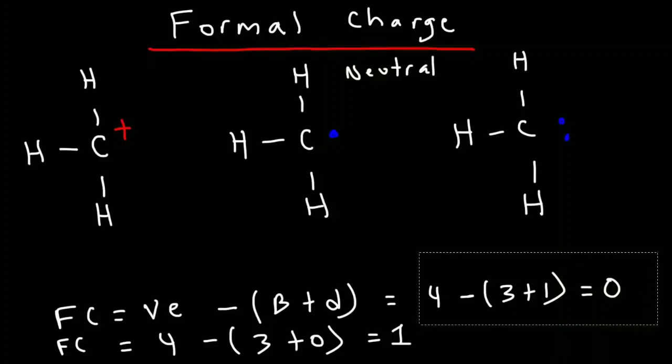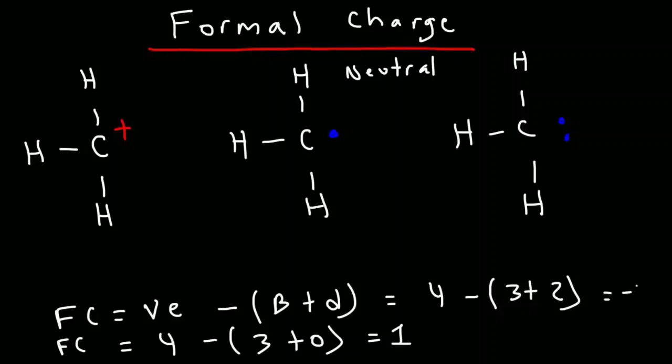Now for the last example on the right, the valence electrons of carbon will still be the same. We still have three bonds, but this time we have two dots. One lone pair is equivalent to two dots. So three plus two is five. Four minus five is negative one. So this particular carbon atom has a negative charge.